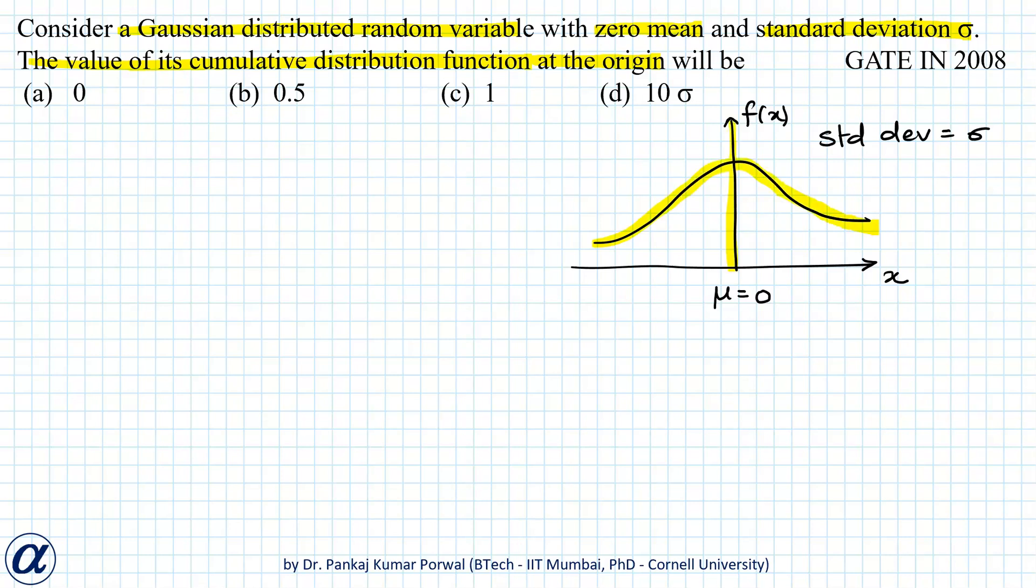The area under the curve on the left side of the mean equals the area on the right side. Because the total area is one, each area will be 0.5.